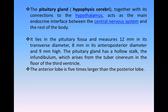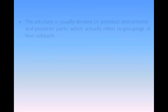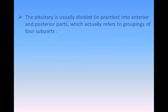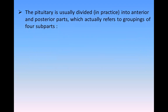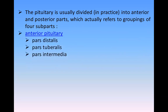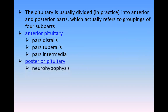The anterior lobe is five times larger than the posterior lobe. The pituitary gland is divided into anterior and posterior parts. The anterior lobe is subdivided into pars distalis, pars tuberalis, and pars intermedia. The posterior pituitary is known as the neurohypophysis.